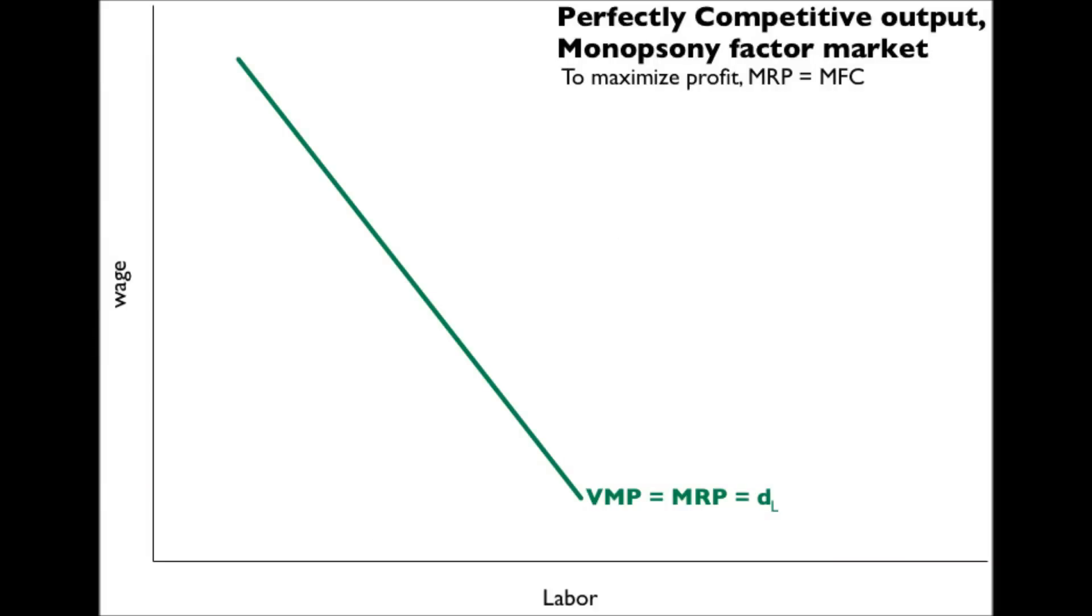Because of monopsony in the factor market, there's a single buyer of the resources, the firm faces the industry supply of labor, and marginal factor cost will lie above the supply. Choosing to hire where marginal revenue product equals marginal factor cost, L-star workers will be hired, less than with perfect competition, and the employer will drop down to the supply curve of labor to see what wage the sellers of labor, that is, the employees, are willing to accept.